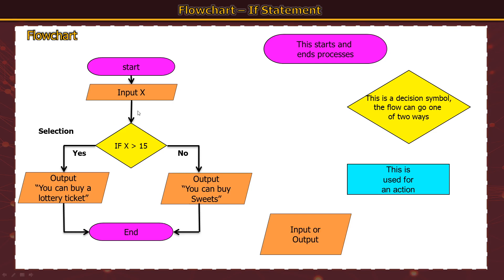This simple flowchart checks whether someone is old enough to buy a lottery ticket — in the UK the legal age is 16. We input x; for this example I'll enter 15. If 15 is greater than 15 — which it's not, 15 equals 15 — so we go to no: you can buy sweets and the program ends. Now I'll change it slightly to 'greater than or equal to 16'. Entering 15 again: is 15 greater than 16? No. Is 15 equal to 16? No. So again we go down the no path — you can buy sweets. Both operators produce the same outcome here.